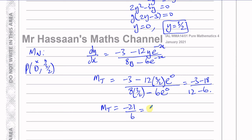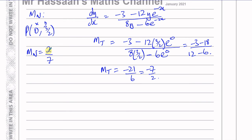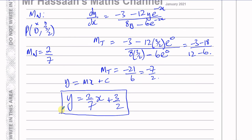The gradient of the normal is the negative reciprocal of the tangent gradient. Changing the sign and turning upside down: minus 7/2 becomes positive 2/7. We can verify: 2/7 times minus 7/2 equals minus 1, confirming perpendicularity. Since P is at (0, 3/2) which is directly the y-intercept, we can write the equation straight away: y equals (2/7)x plus 3/2. That's the equation of the normal to the curve at point P.